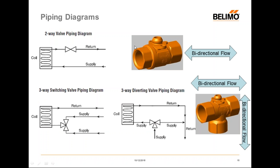The QCV two-way valves are bi-directional, so piping becomes very easy — you don't need to pay attention to the flow arrows and it can be mounted in any orientation. The three-way valves are also bi-directional, with two designated piping configurations: a changeover configuration or diverting.